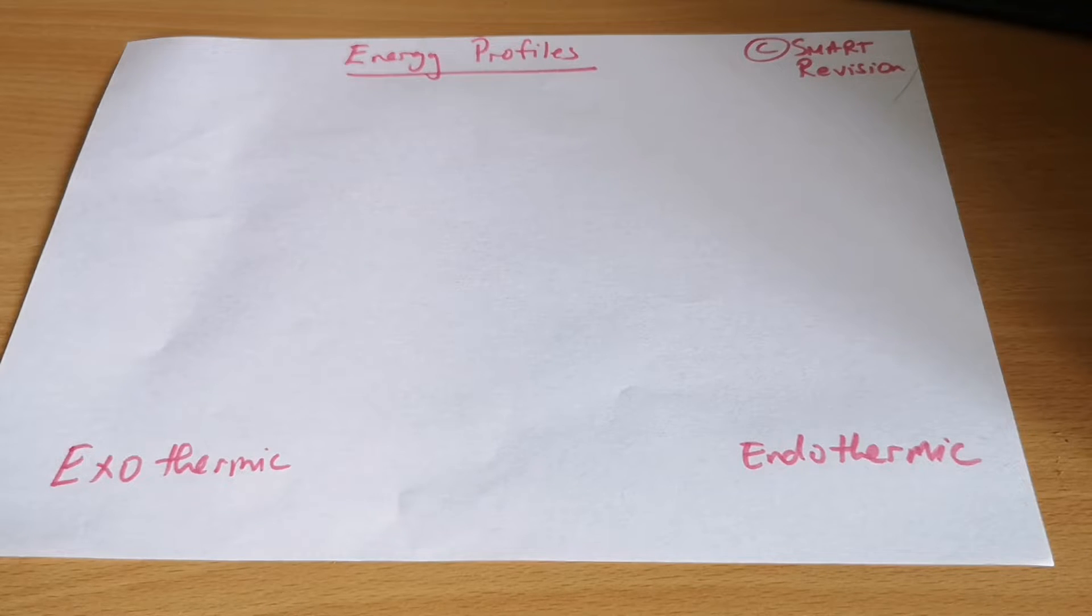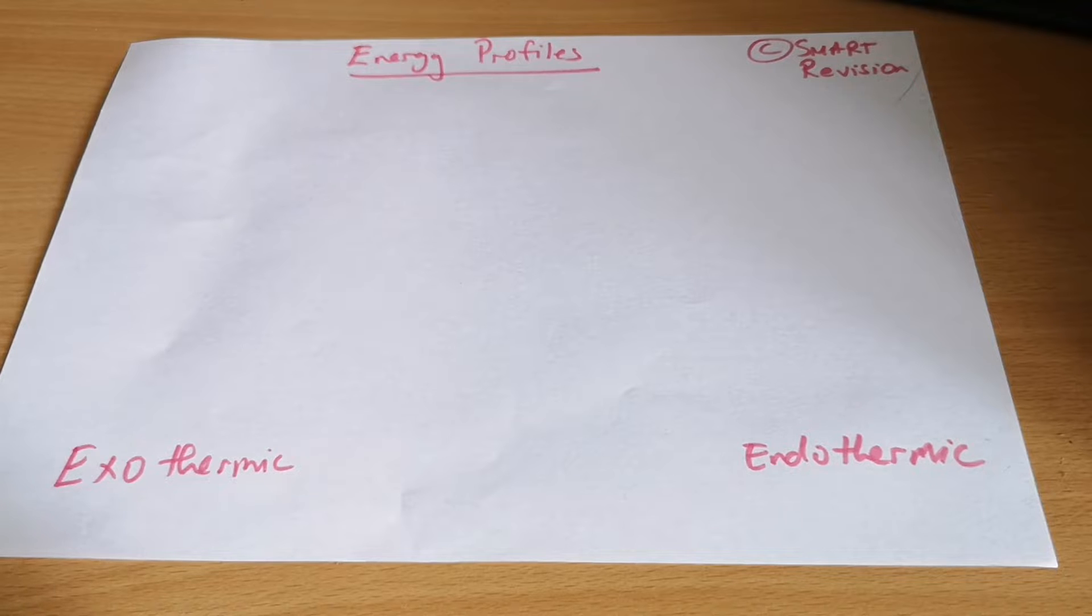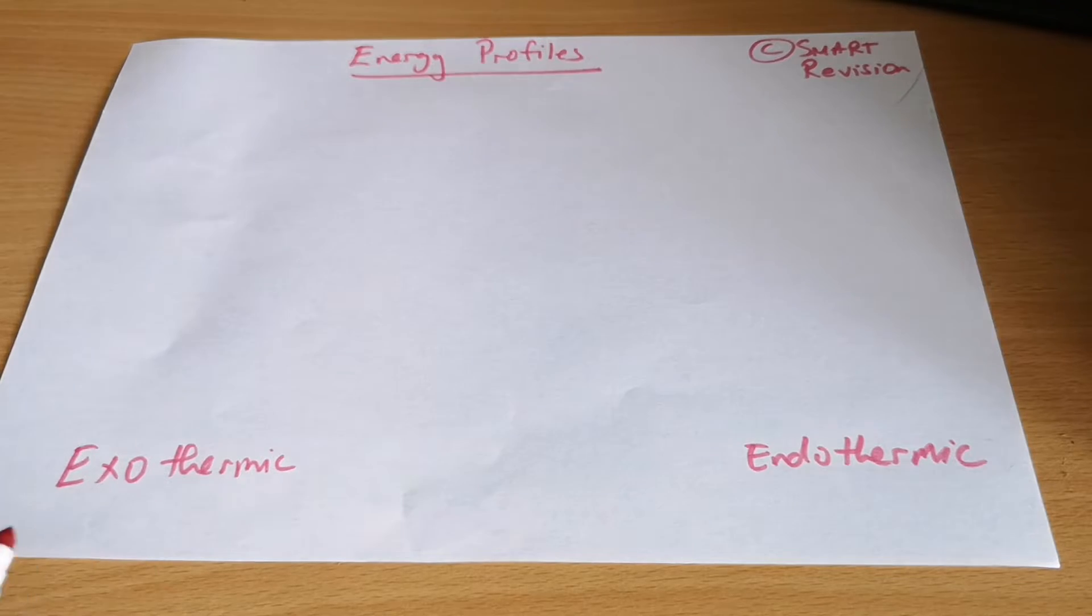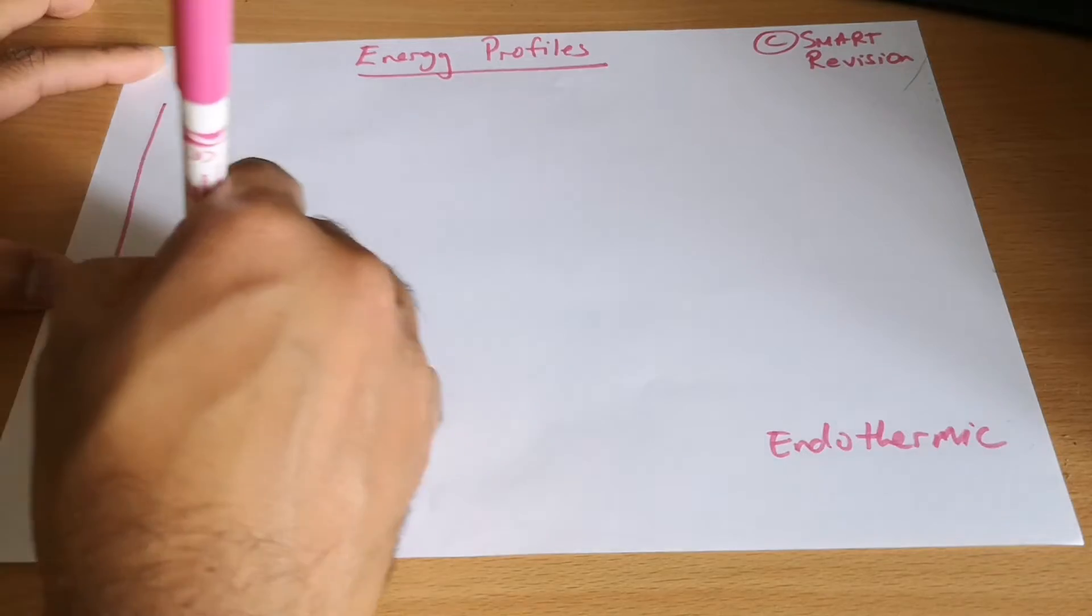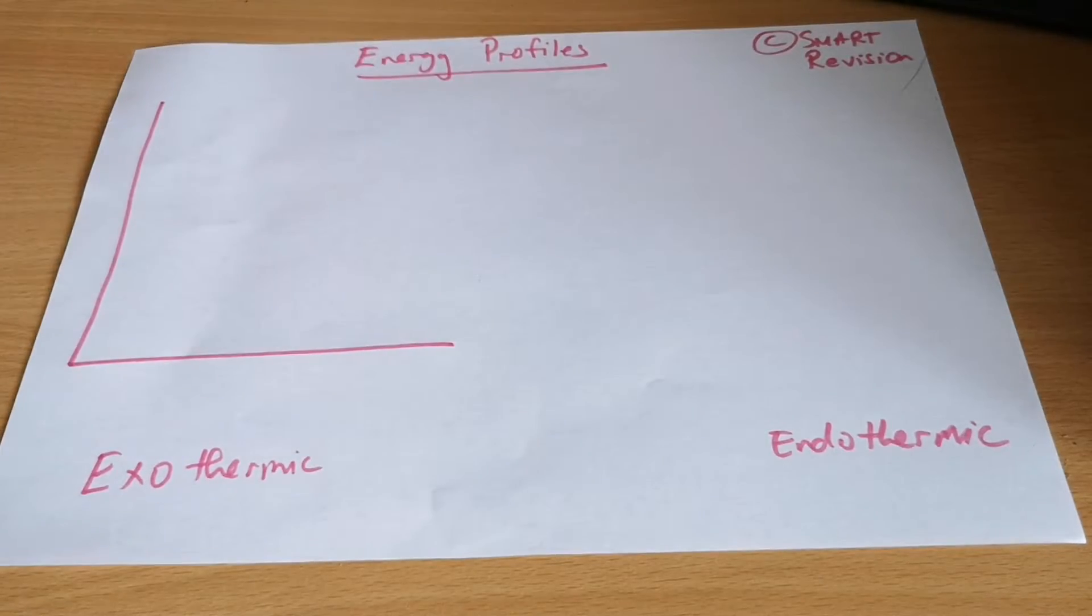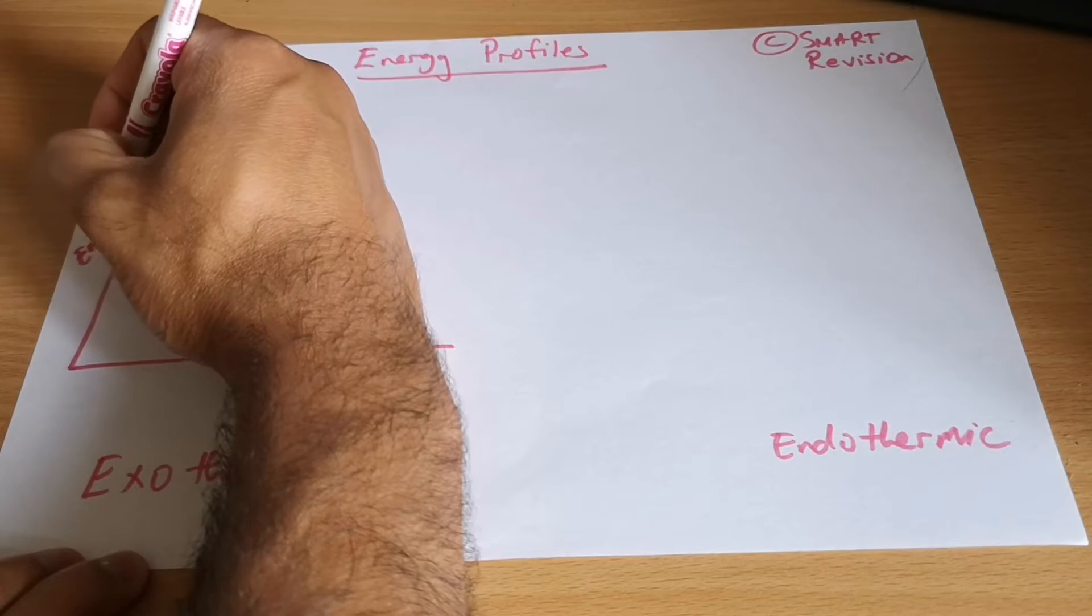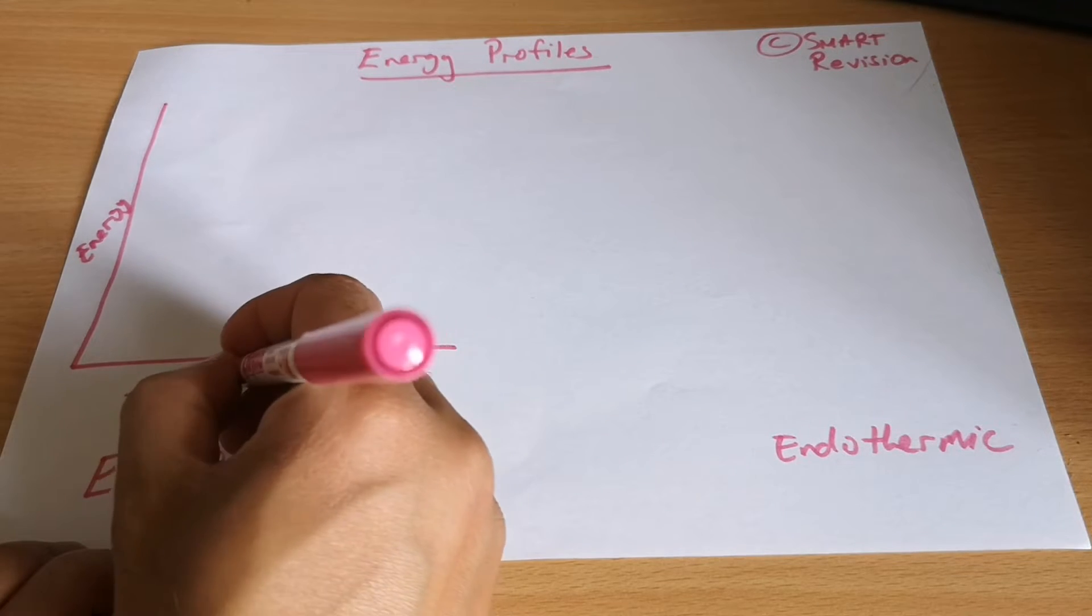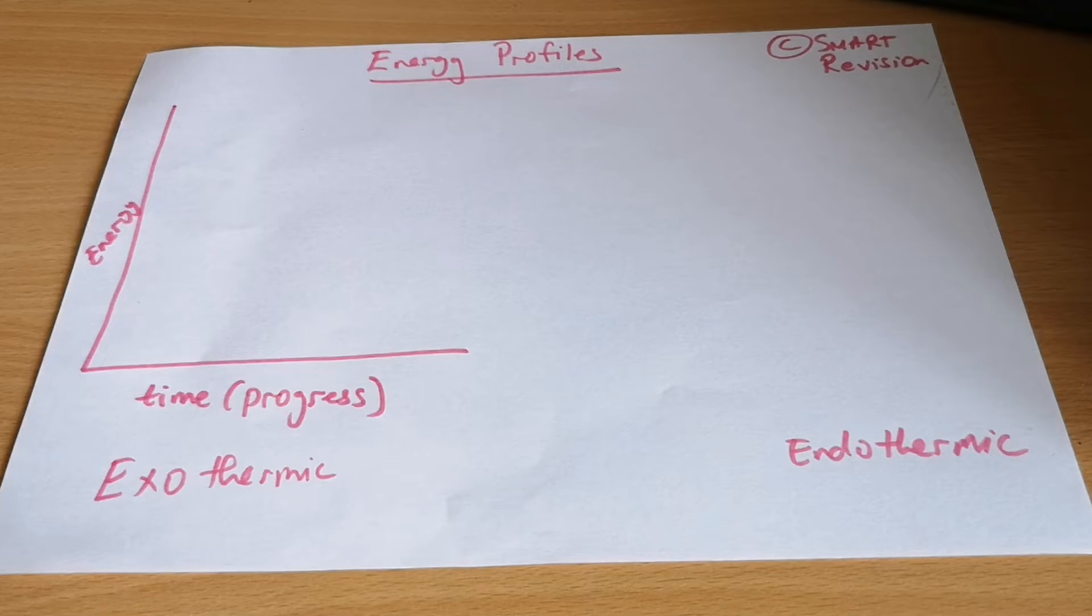Now in an exothermic reaction, heat is being given out. Scientists and chemists like to represent the data as graphs, so this is exactly what we are going to do. I'm going to have a graph which is going to look something like that. On my x-axis there I'm going to have energy, and this is going to be time or the progress of the reaction.